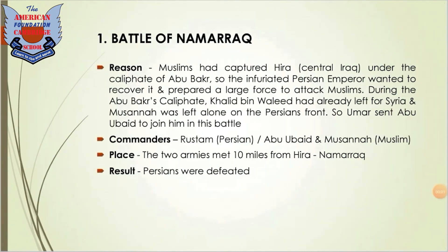Battle of Namarak. This is the first battle that held under the second Caliphate. Muslims had captured central Iraq and Hira under the Caliphate of Abu Bakr with the help of Khalid bin Walid and Musanna. The Persians got furious and wanted to recover it, so they prepared a large force to attack Muslims. During the Caliphate of Abu Bakr, Hazrat Khalid bin Walid had already left for Syria, leaving Musanna alone on the Persian front. Hazrat Umar decided to send Abu Ubaid to join him. The commanders from the Persian side were Rustam, and from the Muslim side were Abu Ubaid and Musanna. The two armies met 10 miles from Hira at Namarak, and in this battle Muslims were victorious.